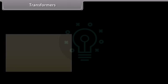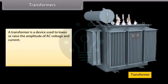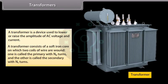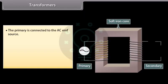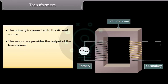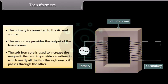Transformers. A transformer is a device used to lower or raise the amplitude of AC voltage and current. A transformer consists of a soft iron core on which two coils of wire are wound. One is called the primary with NP turns and the other is called the secondary with NS turns. The primary is connected to the AC EMF source and the secondary provides the output. The soft iron core increases the magnetic flux and provides a medium in which nearly all the flux through one coil passes through the other, inducing an EMF in both coils.